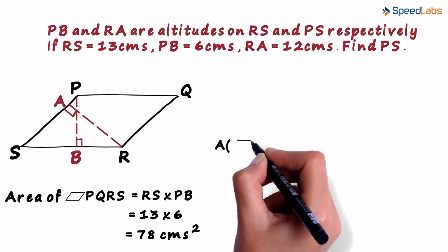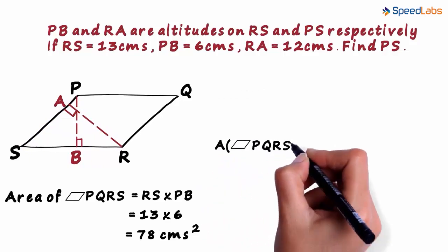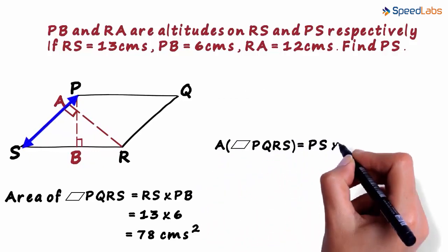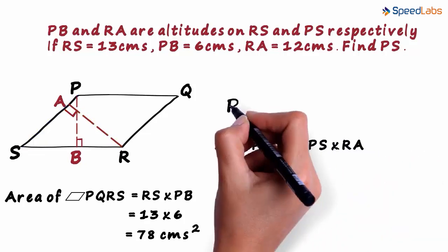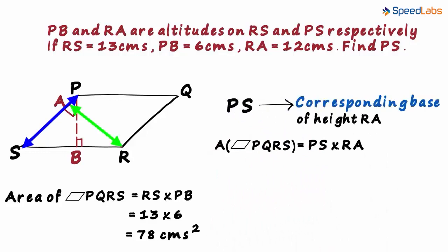So the area of parallelogram PQRS can also be written as PS multiplied by RA. In this case, PS is the corresponding base of height RA. So do not be under the impression that the area will only be RS multiplied by PB.